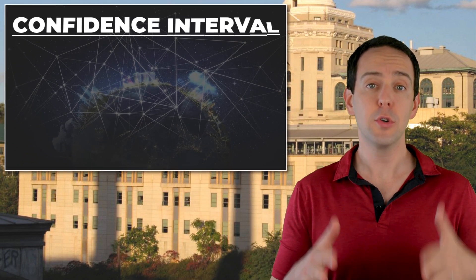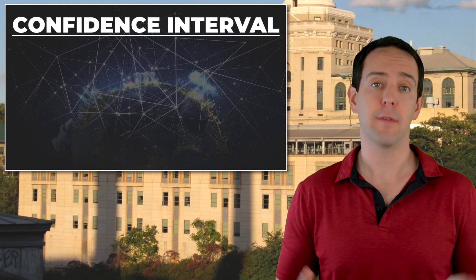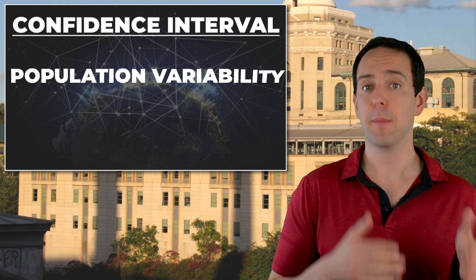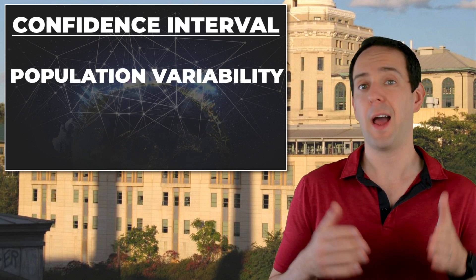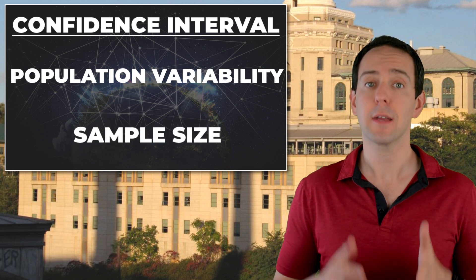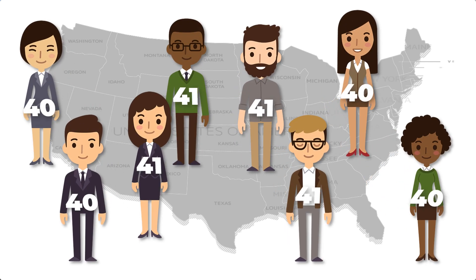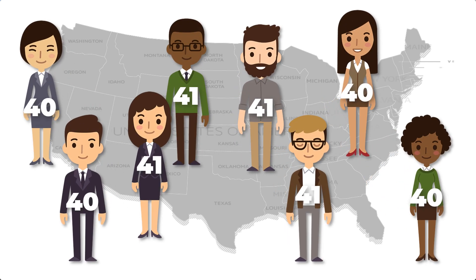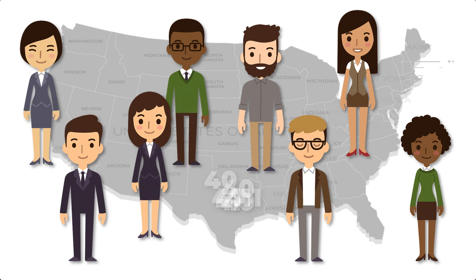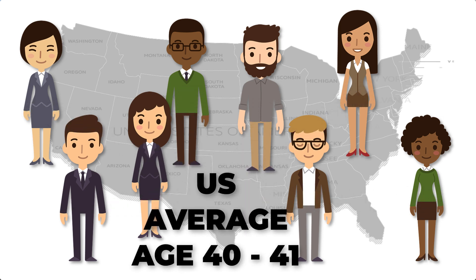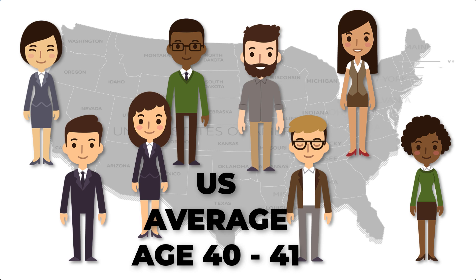There are two things that determine the range of a confidence interval: how varied the population is, and how big your sample is. Let's take those one at a time. If everyone in the US was either 40 or 41 years old, any sample I take would result in only people who are either 40 or 41 years old, and my best guess on the average age of all Americans would be something like between 40 and 41 years of age. It would be a really tight estimate.